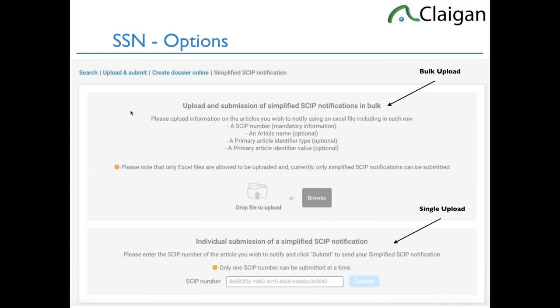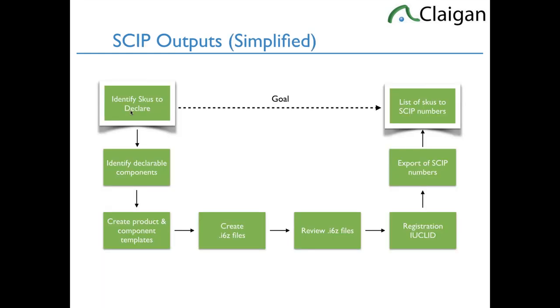Remember the process: what products are you selling? Identify the declarable components. Create the product and component templates. Create the I6Z files. Review them - don't forget that in your timeline. Register in the system, which is the drag-drop process. Export your SCIP numbers by pushing a single button - it exports them in an Excel file of everything you've registered. And then you have a list of SCIP numbers for your registered products, which is the real goal.